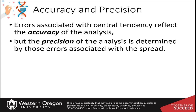Last time in Chapter 4, you learned about calculating standard deviation and the spread that comes around a set of data. This time we want to talk a bit more about accuracy and precision, and about where error can come into your data and how you can reflect that in your calculations. Errors associated with central tendency reflect the accuracy of the analysis, while precision is determined by errors associated with the spread.